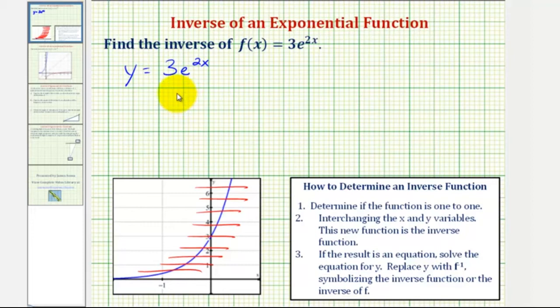And now to find the inverse function, we interchange the x and y variables. And therefore, the inverse function would be x equals three times e raised to the power of two y.